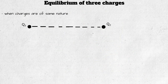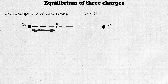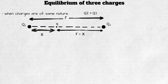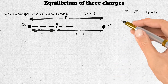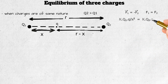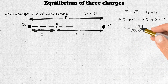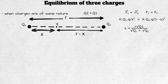Equilibrium of three charges: if the nature of two charges is the same, the equilibrium point will be somewhere between the two charges and closer to the smaller charge. Placing a small charge q at that equilibrium point, if its distance from the smaller charge is x, then its distance from the bigger charge is r−x. For equilibrium, F₁ = F₂, giving k·Q1·q / x² = k·Q2·q / (r−x)². Solving: x = r·√Q1 / (√Q1 + √Q2). Note that x is the distance from the smaller charge; distance from the bigger charge is r−x.